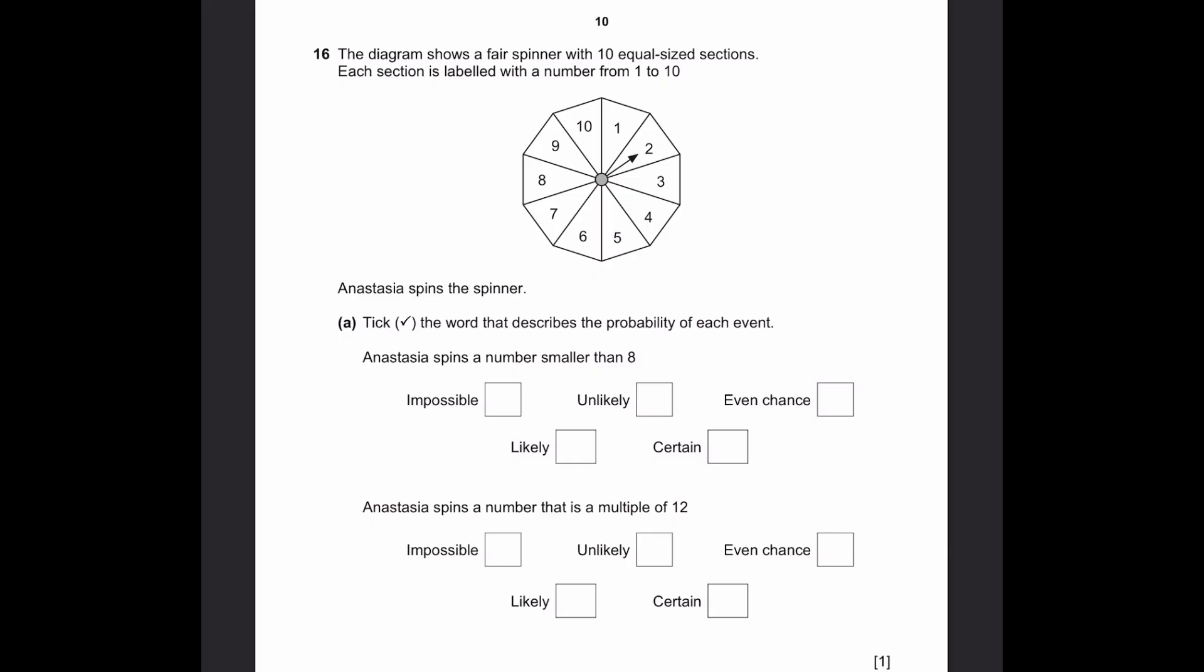Question 16. The diagram shows a fair spinner with 10 equal size sections. Each section is labeled with a number from 1 to 10. Anastasia spins the spinner. A. Take the word that describes the probability of each event. Anastasia spins a number smaller than 8. Smaller than 8 would be numbers from 1 to 7, so that's 7 out of 10, which is in the likely category. Anastasia spins a number that's a multiple of 12. Multiple of 12 starts from 12, 24, 36, and goes on. But out of the first 10 numbers, which are 1 to 10, there is no multiple of 12, so it is impossible. That's the answer.